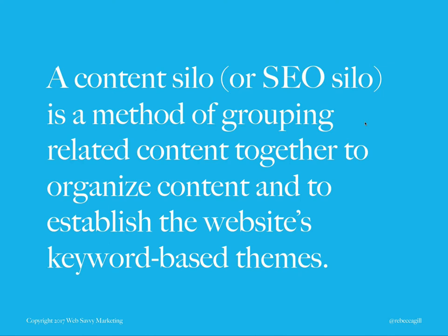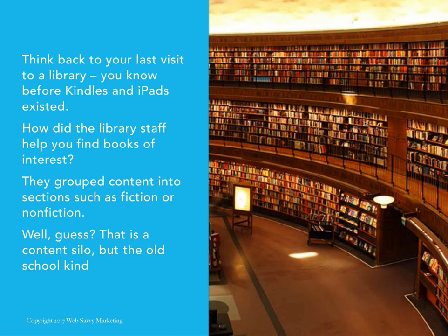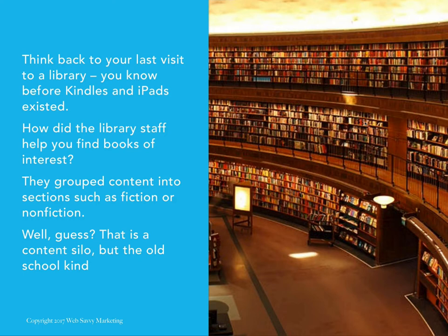Think back to when you last visited a physical library. The staff helped you find books by grouping content into sections like fiction, nonfiction, romance, or westerns — that's an old-fashioned content silo. Bookstores do the same thing. Barnes & Noble has children, adult, fiction, nonfiction, psychology, business sections. Those are silos of content, and we're doing exactly that in a digital format on the web — for both SEO and usability.